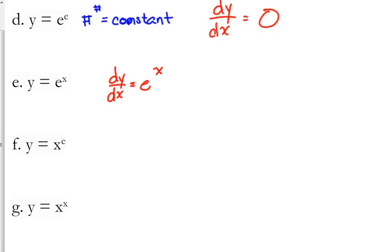So the derivative of any constant is zero. Now, the second one — y equals e to the x — well, that's the easy one. Its derivative is itself. Its integral is itself.